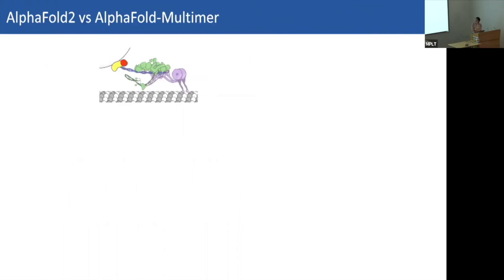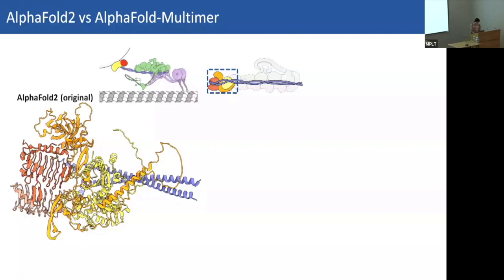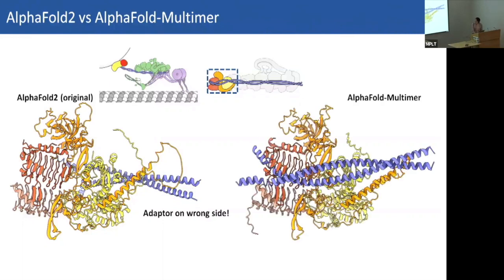Comparing AlphaFold 2 original versus Multimer version 1 on a region of our dynein-dynactin complex: we're looking at a coiled-coil adaptor protein interacting with the pointed end of dynactin. The original AlphaFold predicted the coiled-coil adaptor on the wrong side of the complex — very annoying. However, using Multimer, it now predicts the coiled-coil on the correct side and revealed key interactions in this region that agreed with experimental evidence. AlphaFold Multimer can be very powerful for protein complex predictions.